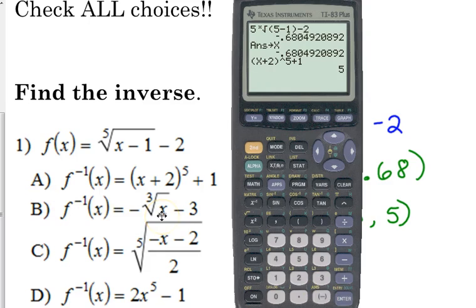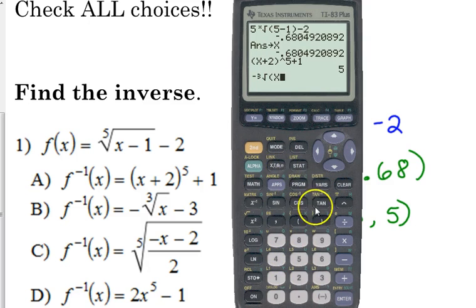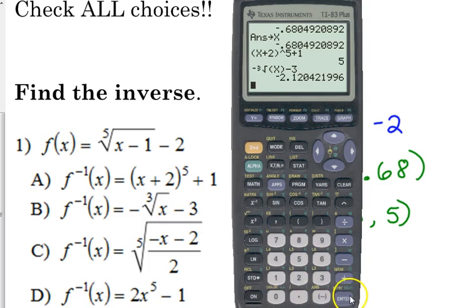I'm going to try B. B doesn't really make much sense. A cube root, how is a cube root related to a fifth root? I don't really make sense, but you never know. Cube root, negative cube root of x. Close your parentheses, because x is the only thing under that root. Minus 3. That did not give me 5. So I can say B is not the answer.